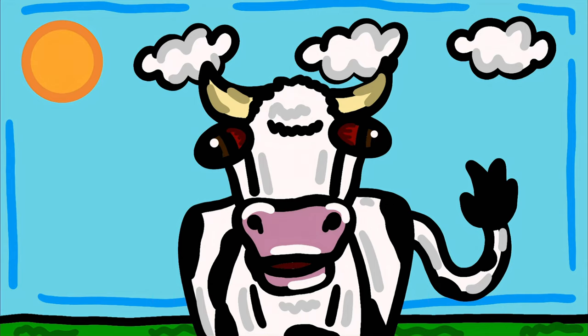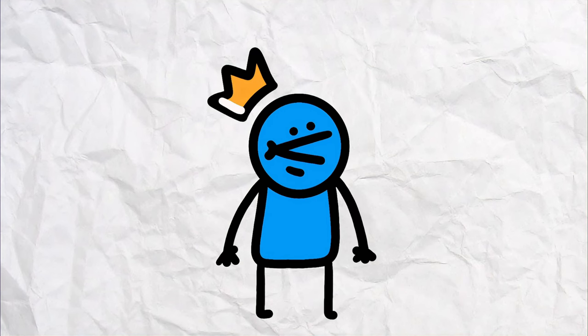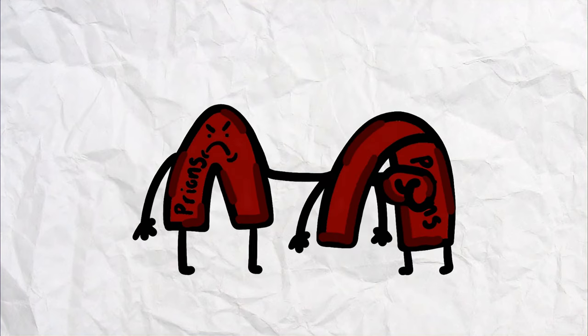Number 7. Mad Cow Disease. Most of you probably already know about this disease, so this will be a quick one. It is caused by prions, which are misfolded proteins that can induce other proteins to misfold.